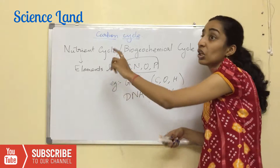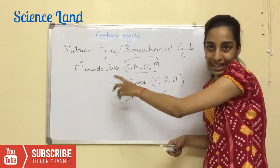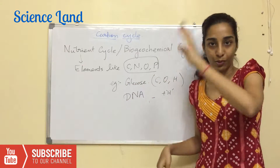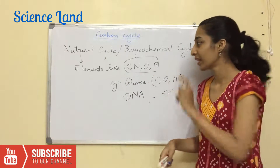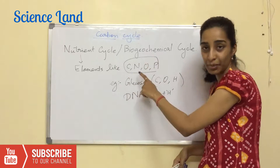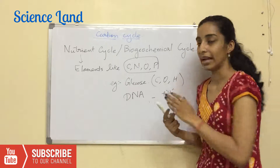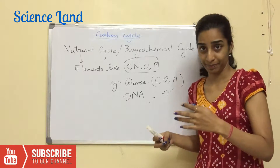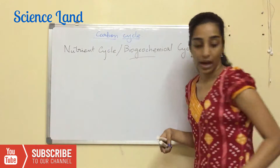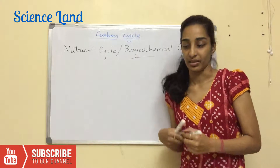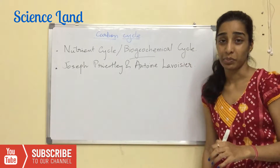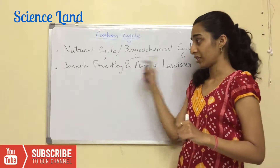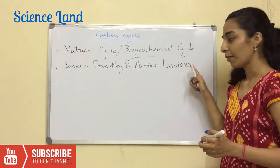So that's why it is known as a nutrient cycle — it's just the basic elements like carbon, nitrogen, oxygen, and phosphorus that are recycling again and again. Now, the two people who discovered the carbon cycle are Joseph Priestley and Antoine Lavoisier.